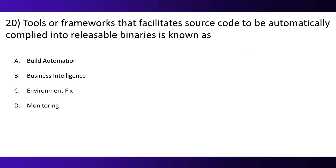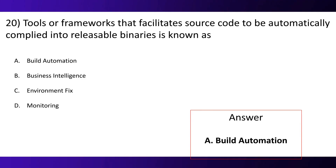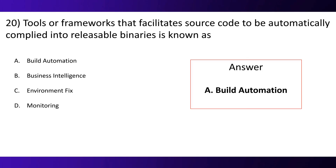Question 20. Tools or frameworks that facilitate source code to be automatically compiled into releasable binaries is known as: Option A, build automation. Option B, business intelligence. Option C, environment fix. Option D, monitoring. And the correct option is A — build automation.